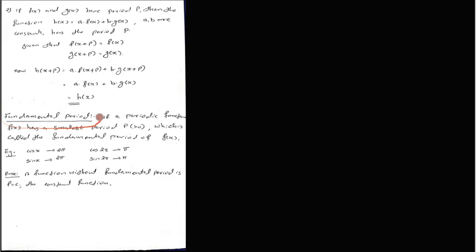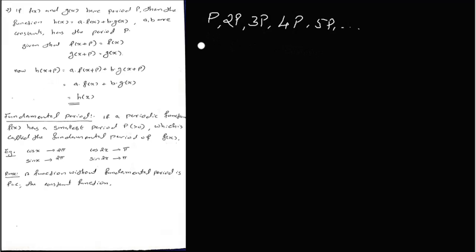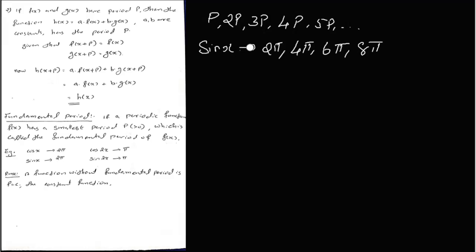The fundamental period: if a periodic function f(x) has a smallest period p greater than zero, that is called the fundamental period of f(x). For example, sin x has a period of 2pi. This 2pi is the fundamental period of sin x.